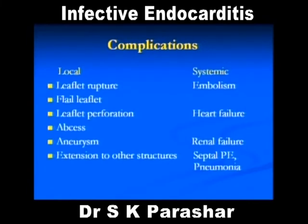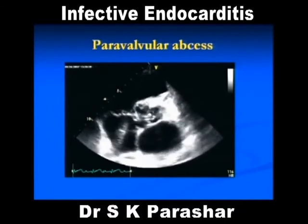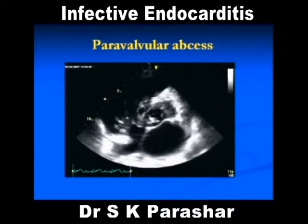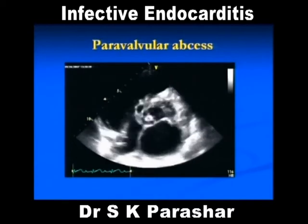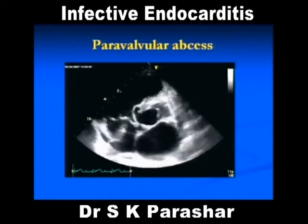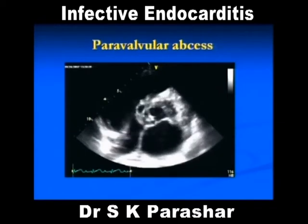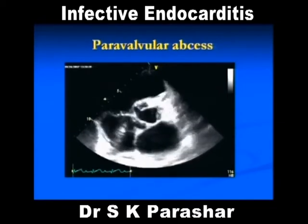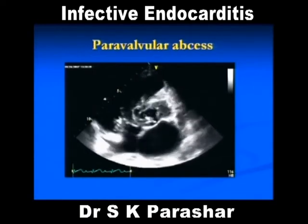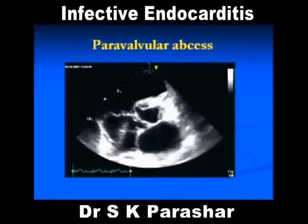These are some of the complications. One patient had a paravalvular abscess — abscess or any fluid collection is an echo-free space, just like a pericardial effusion is an echo-free space. Similarly, an abscess is also an echo-free space. This was a patient who had an aortic vegetation and developed a paravalvular abscess.